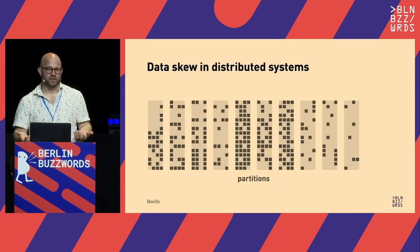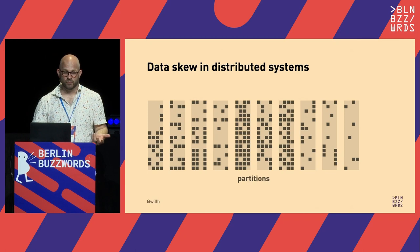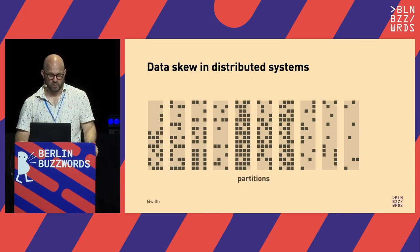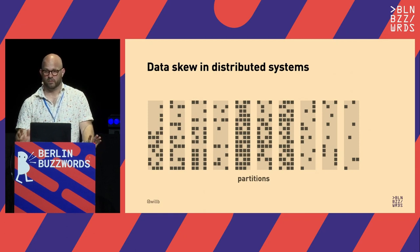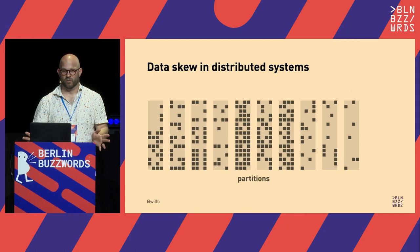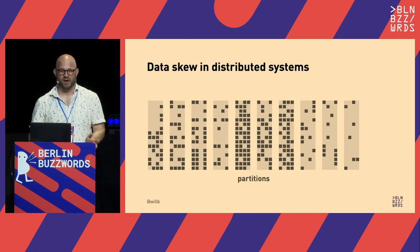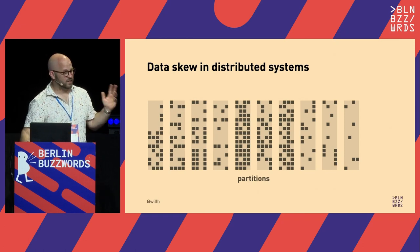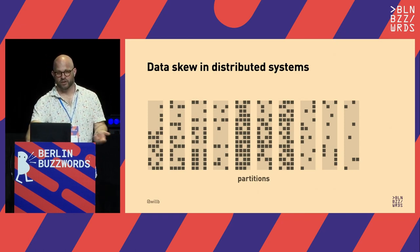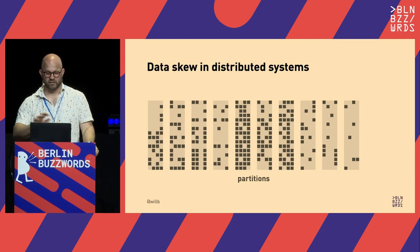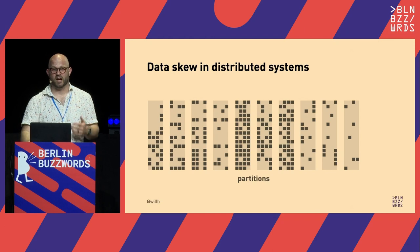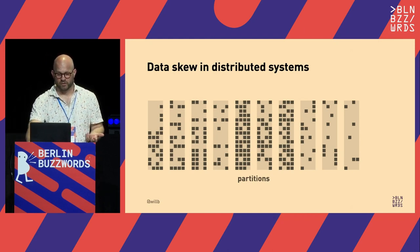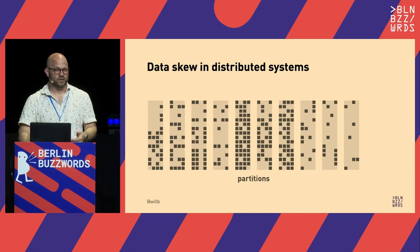Data skew is something you often hear about in the context of distributed processing systems like Spark. Many execution models are susceptible to this, and it can be a performance pitfall. We're going to talk about how we can use synthetic data to identify that our system is susceptible to skew.